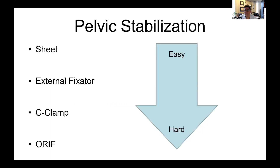At the same time, think about how to stabilize the pelvis. The most common way is to use a sheet or binder — a sheet is perfectly fine and works just as well. Stepping up to more invasive options: applying an external fixator, a C-clamp, which is particularly useful for posterior injuries, or even taking the patient emergently to the OR for fracture surgery.